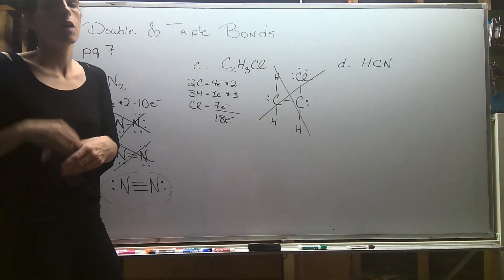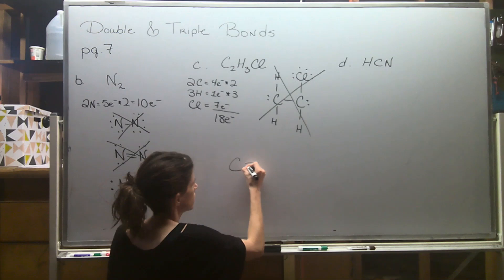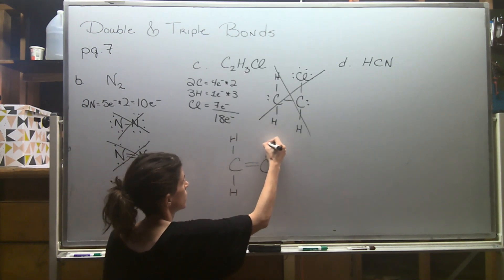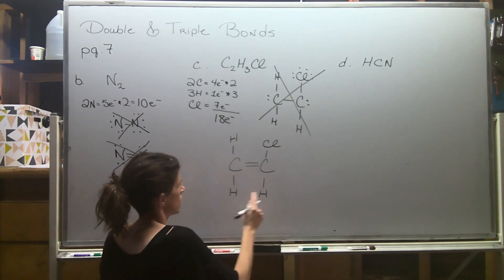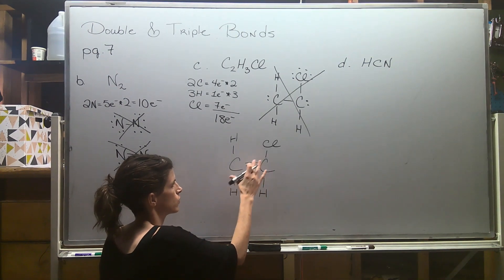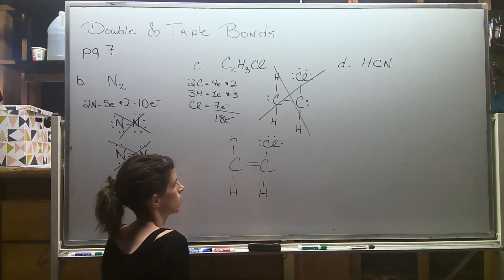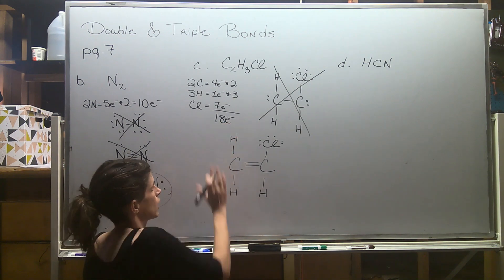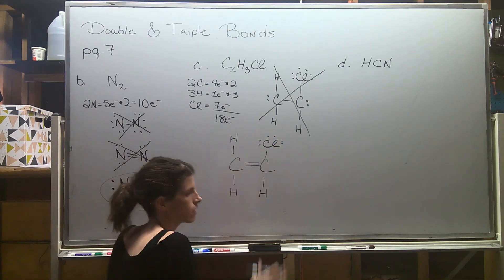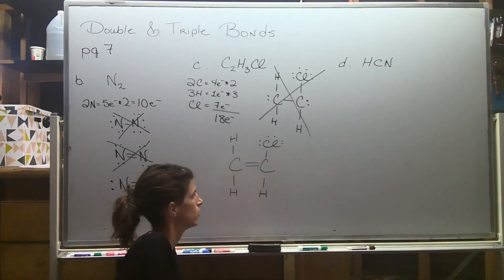Since I don't have enough electrons, I'll use a double bond between the two carbons. Now checking the carbon with the double bond: two, four, six, eight — satisfied, I don't need to add any electrons. The other carbon: two, four, six, eight. Chlorine still needs six more electrons. Checking the total: two, four, six, eight, ten, twelve, fourteen, sixteen, eighteen. That's the correct structure — 18 electrons used and all octets satisfied except hydrogen.